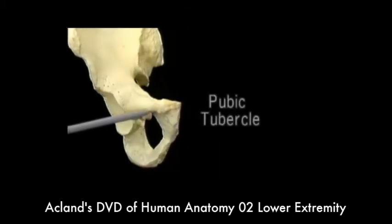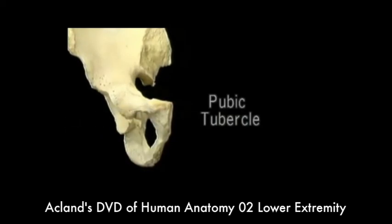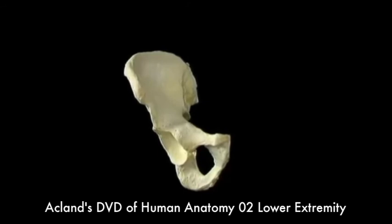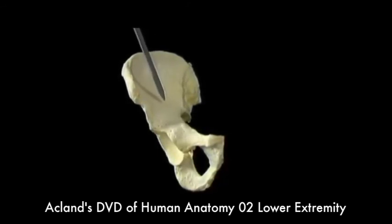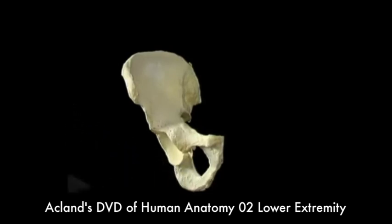This prominence is the pubic tubercle, to which the inguinal ligament is attached. When we look at the hip bone from in front like this, we see the inner aspect of the ilium and the outer aspect of the pubis and ischium.